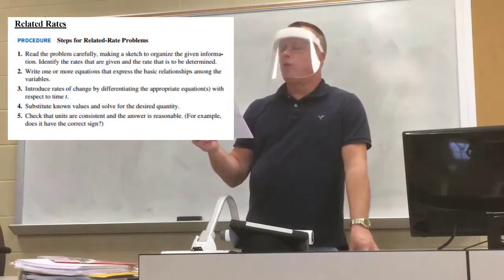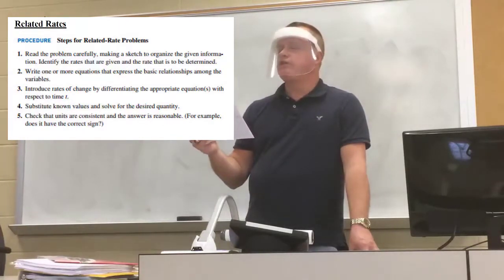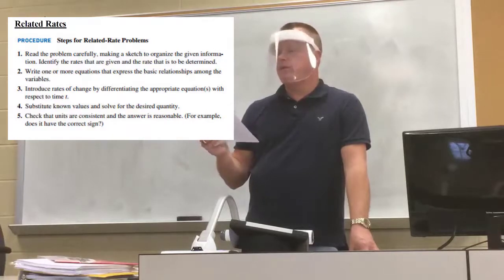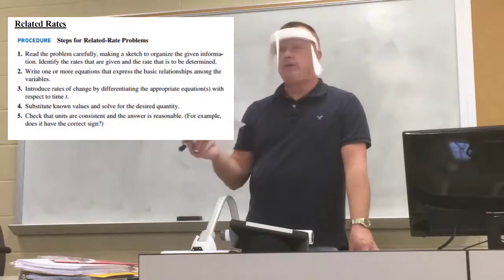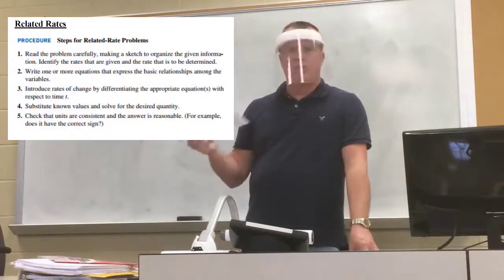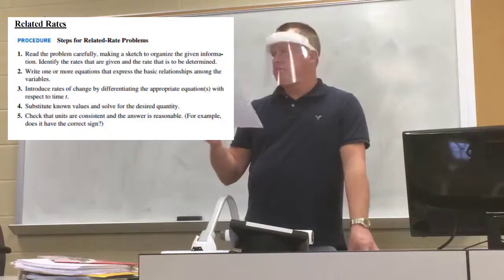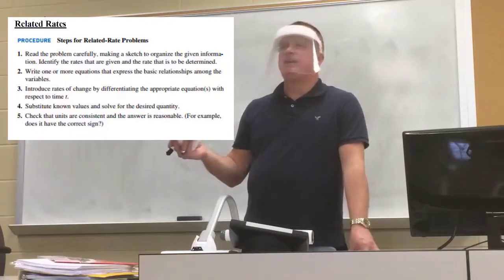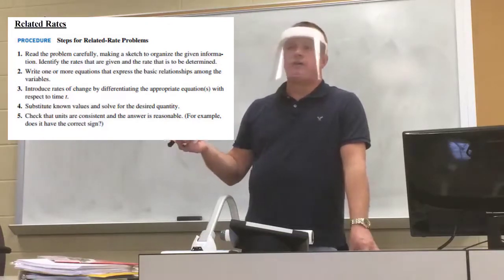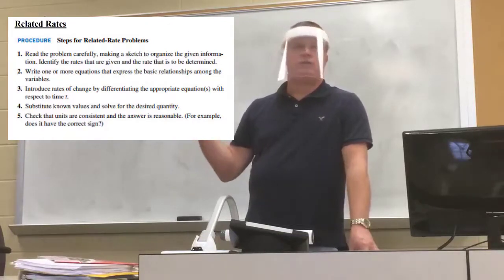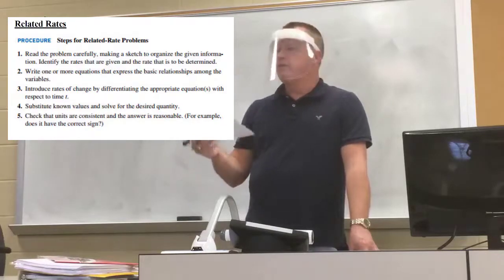Step two: write one or more equations that express the basic relationship among the variables. For most of these we just have one equation — it might be the area of a circle, area equals pi r squared. We start with that, then take the derivative and go from there.